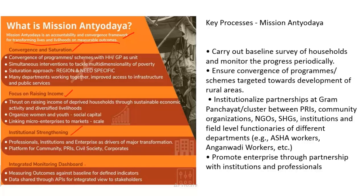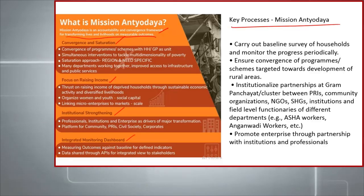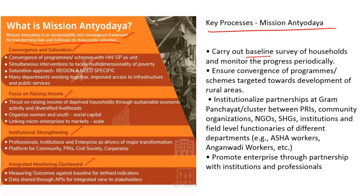The key processes under Mission Antyodaya include: carrying out a baseline survey of households and monitoring progress periodically, ensuring convergence of programs or schemes targeted toward the development of rural areas, and encouraging institutionalization of partnerships at the gram panchayat level between panchayati raj institutions, community organizations, NGOs, self-help groups, and field level functionaries of different departments such as ASHA workers and anganwadi workers.